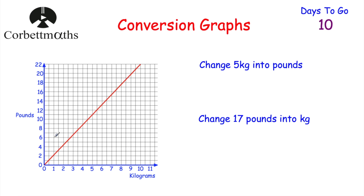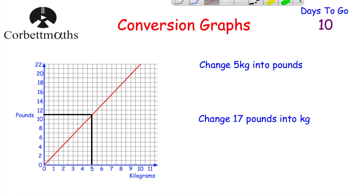Now we've got a conversion graph for kilograms and pounds. We've been asked to change five kilograms into pounds and to change 17 pounds into kilograms. Press pause and think how you would do that. For the first one, we go to five kilograms, up to the line, then across — and that's equal to 11 pounds. So five kilograms is approximately equal to 11 pounds.